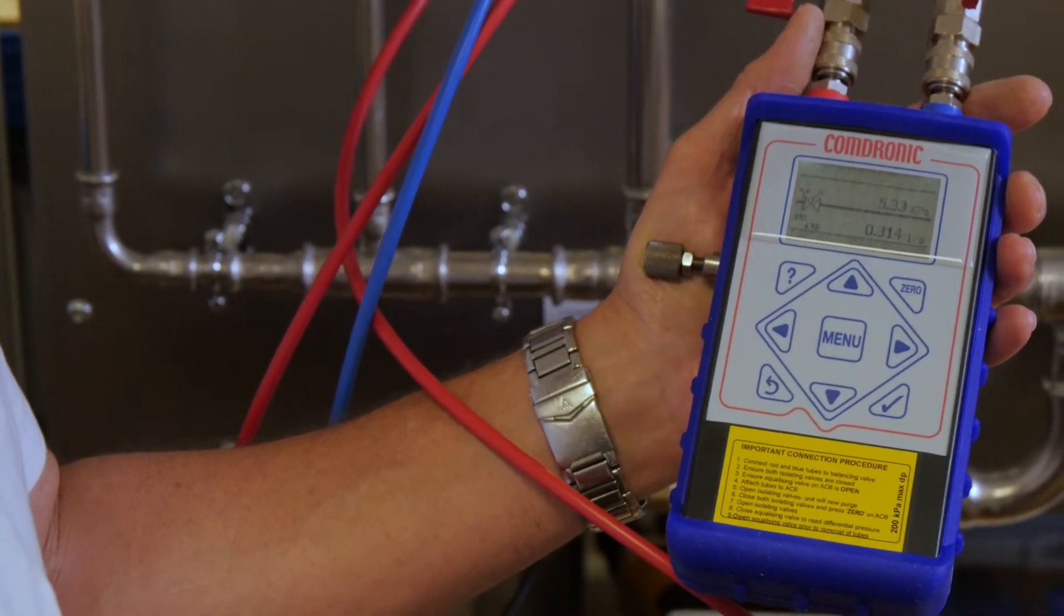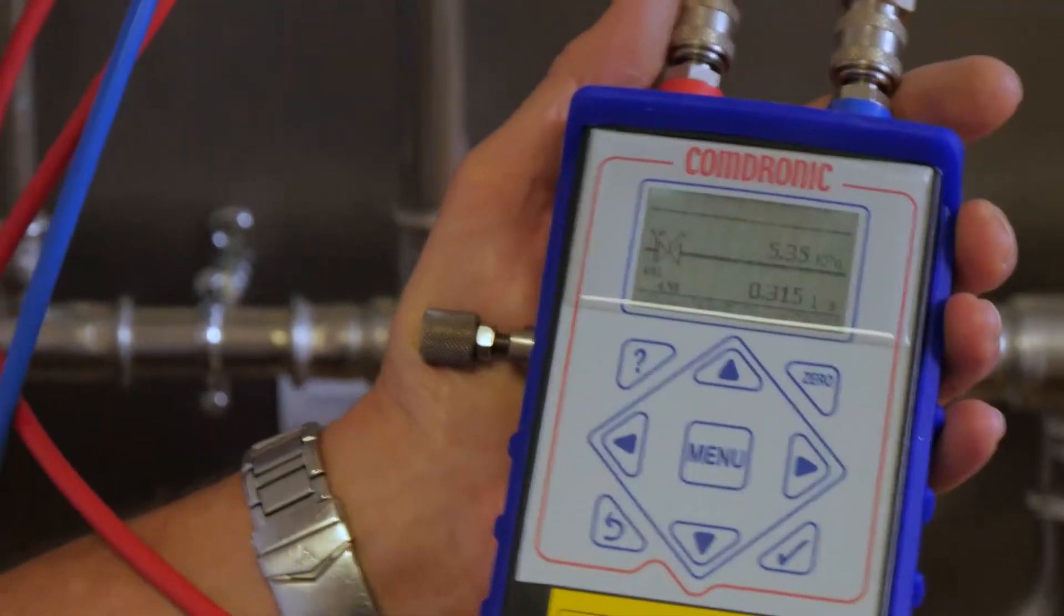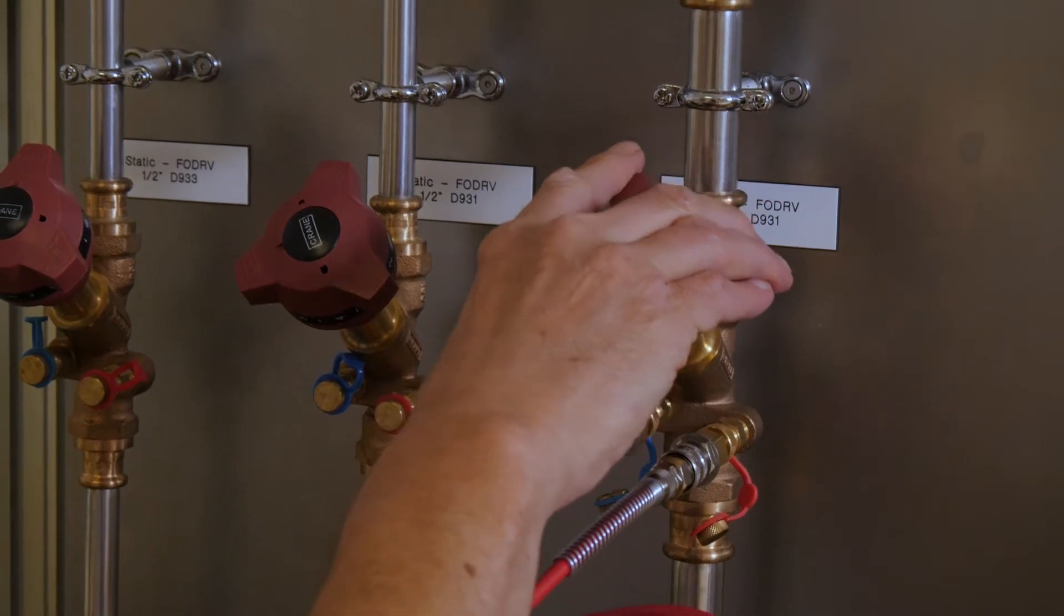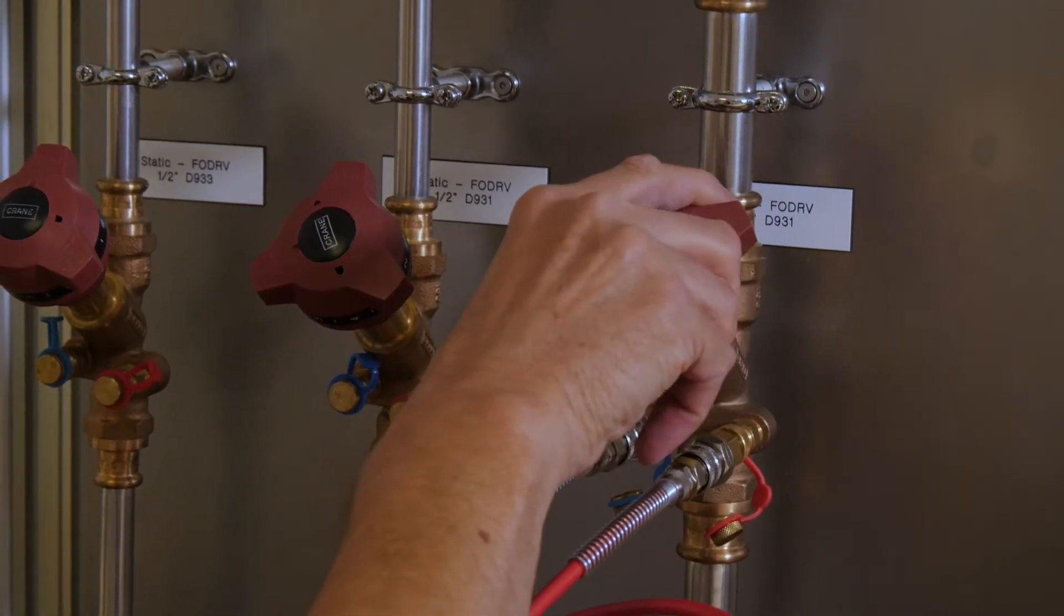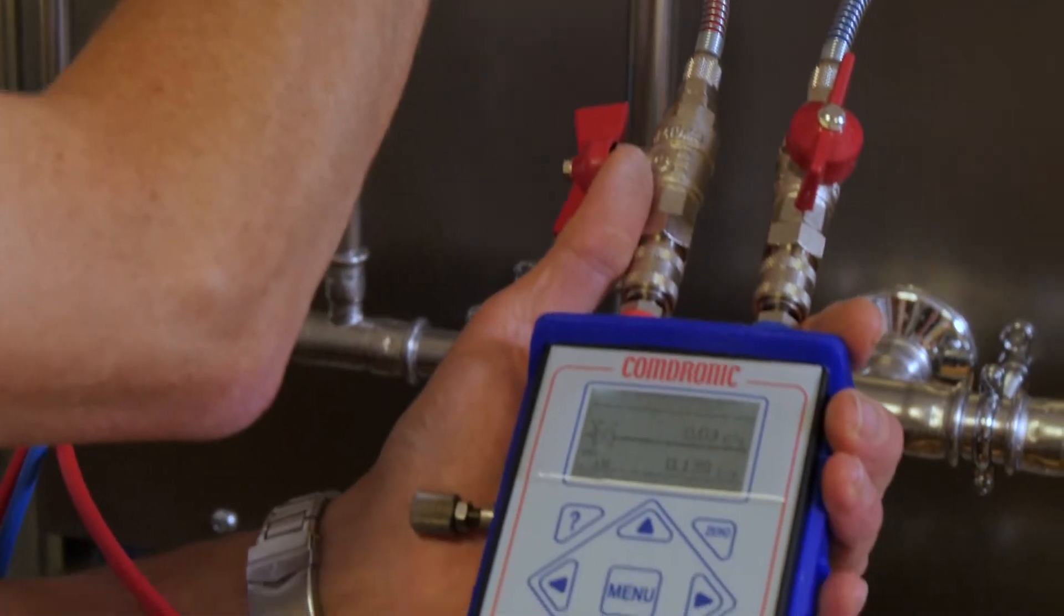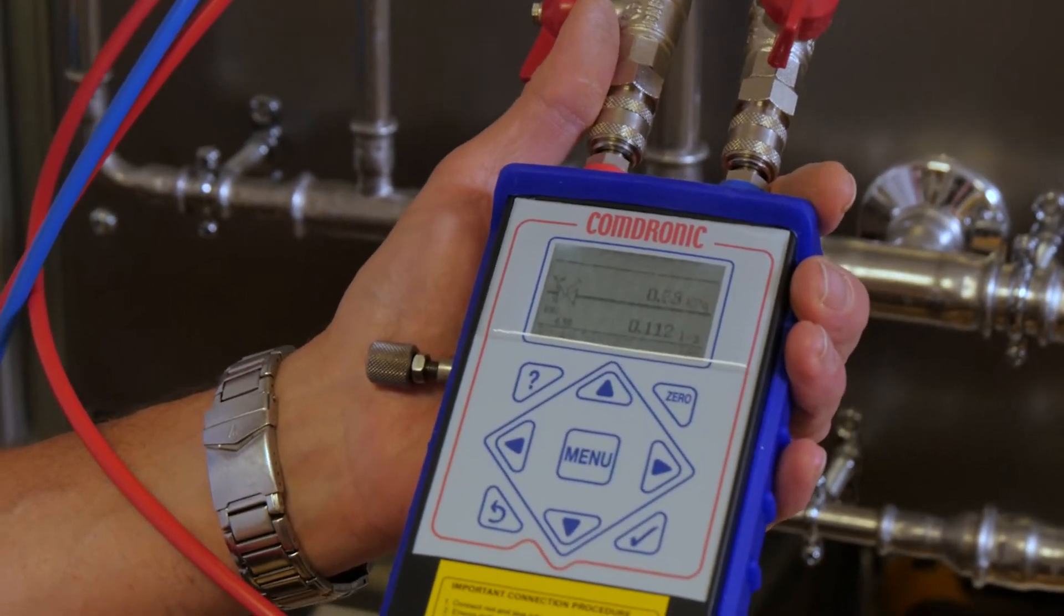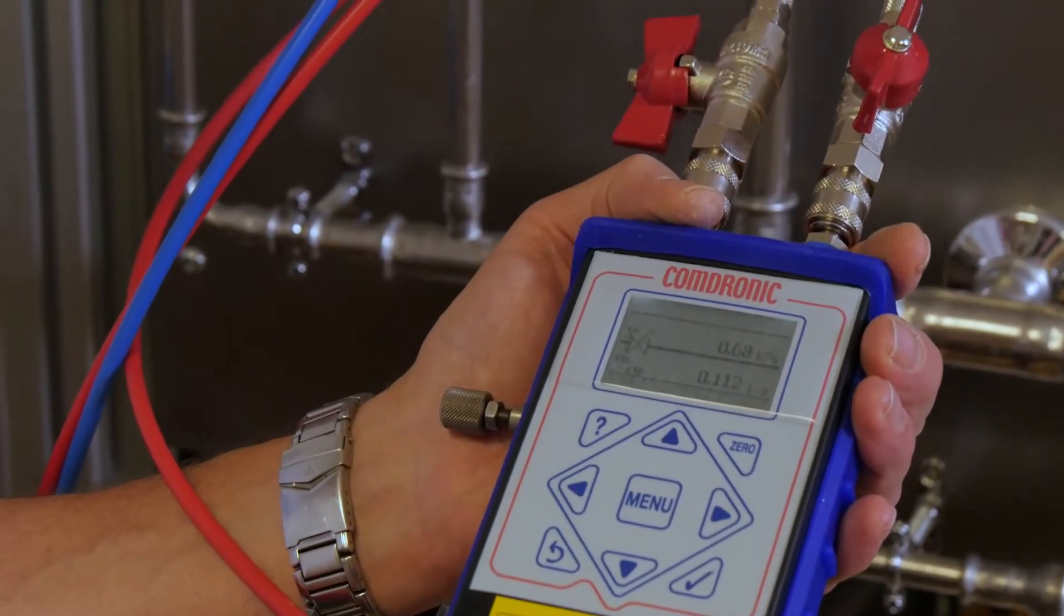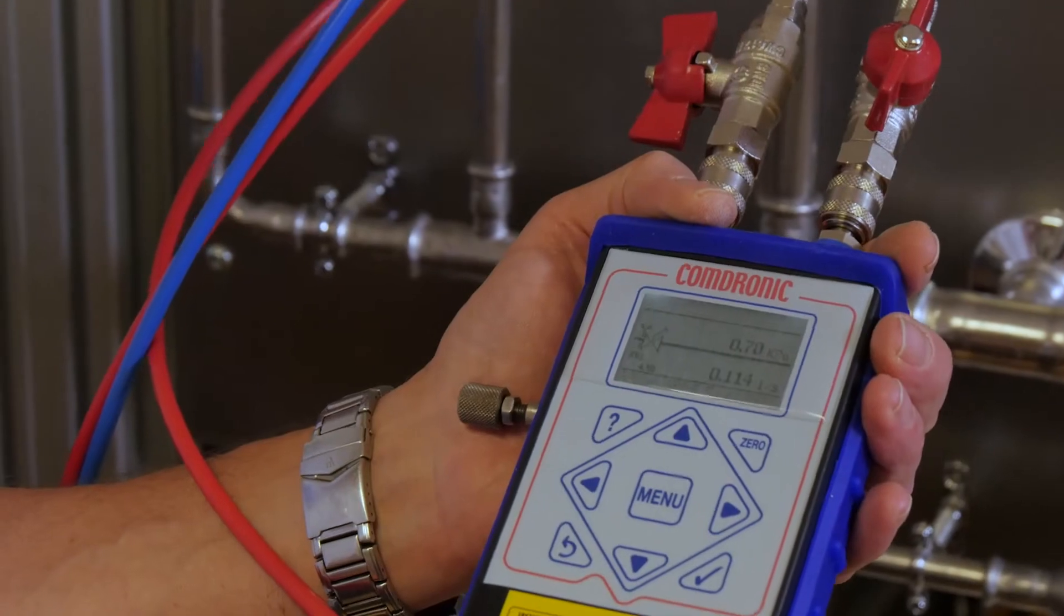If we're aiming for a lower flow rate than that we obviously need to adjust the valve. So we close the valve slowly watching the readings at all times until we reach the flow rate that's required. Once we're at the flow rate that's required we can then lock the valve into position. And we've finished with this particular valve.